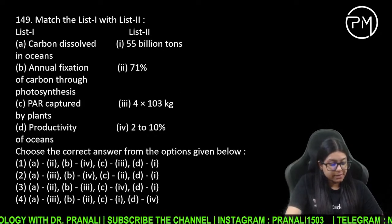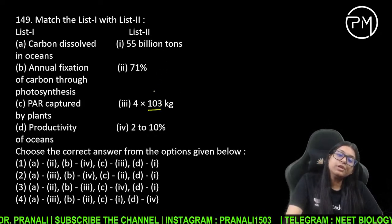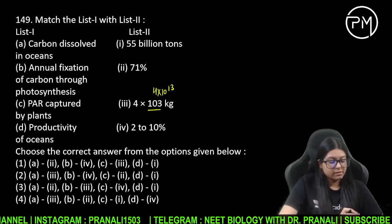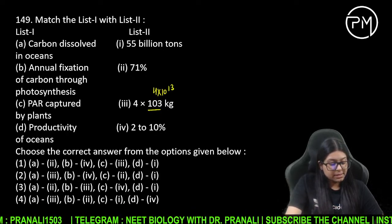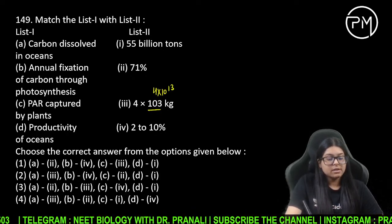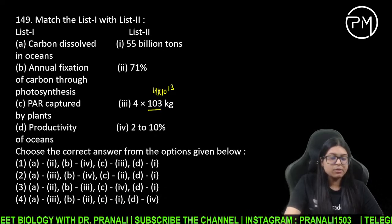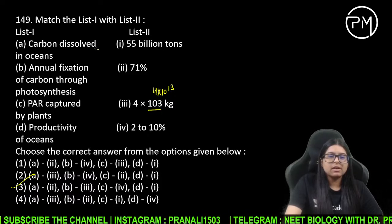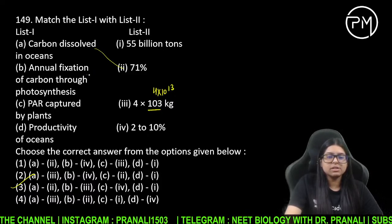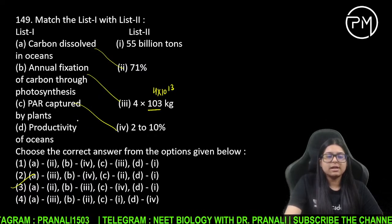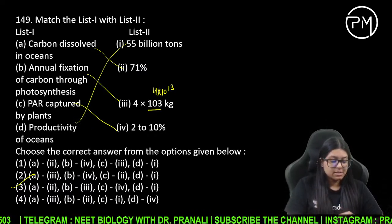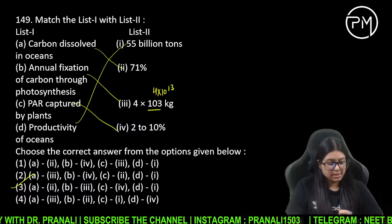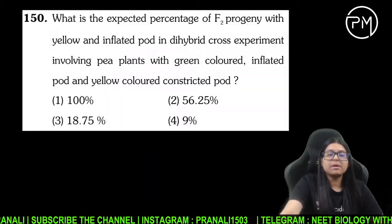NTA ne printing mistake kar di — 4 into 10 to the power 3 hona chahiye tha lekin 4 into 10 to the power 13 likh diya. Is mistake ke saath bhi agar aap answer lagate ho toh answer 3 aayega — carbon jo dissolved hai oceans mein, annual fixation kitni hai, power capture karta hai kitna, productivity of ocean kitni hai.